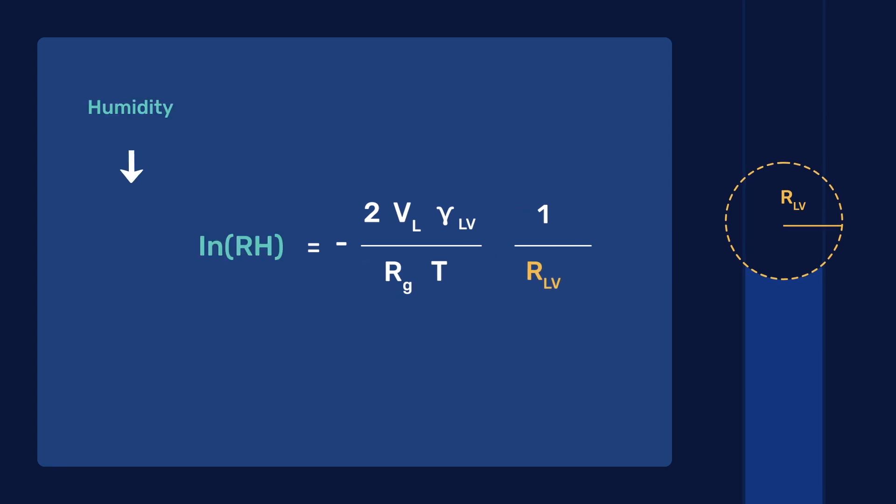As humidity decreases, this means that the radius of the liquid-vapor interface, RLV, decreases. That is, the meniscus becomes more sharply concave.